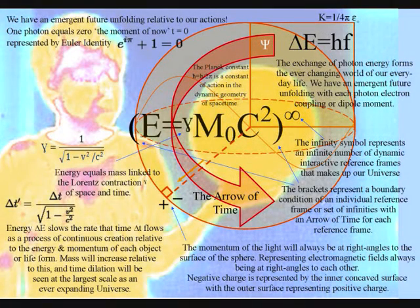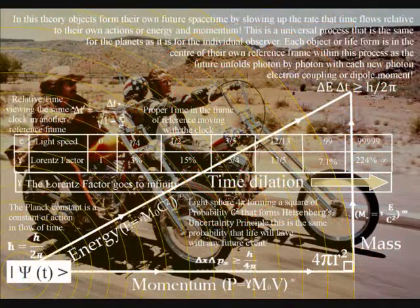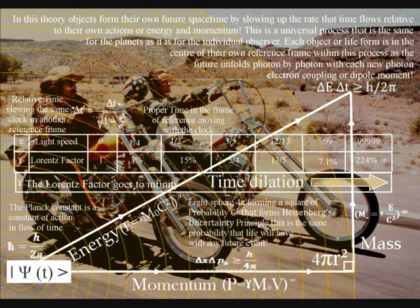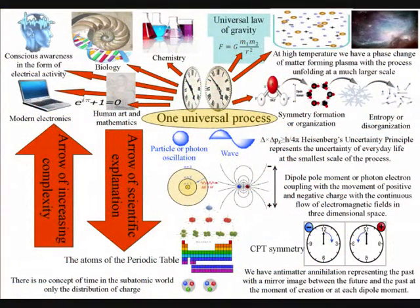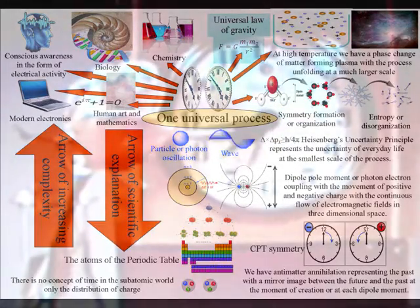We can only imagine what the future will be like, but in this theory it will be relative to our position and the energy and momentum of our own actions. Therefore, everything is connected by one universal process that forms the laws of physics — even an individual rose will form its own future within the geometry and symmetry of this process.